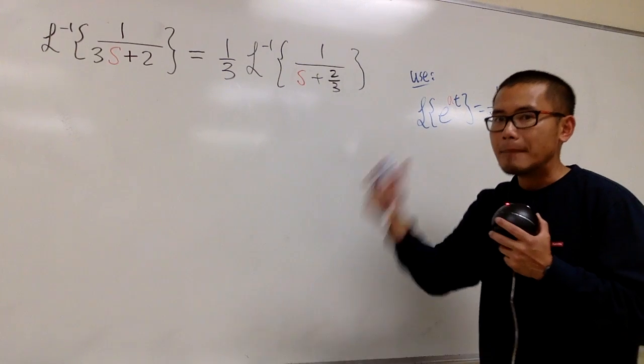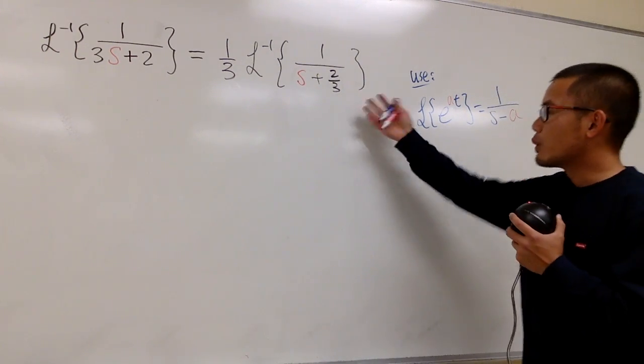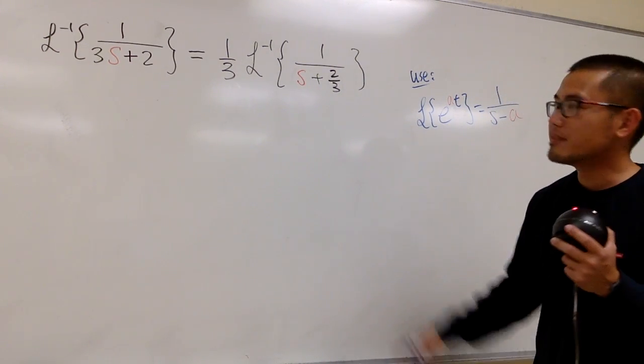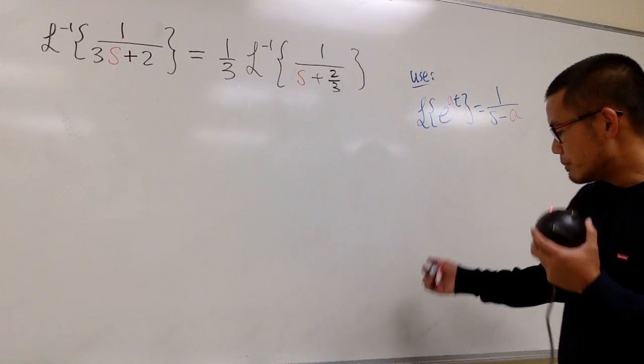here we have a plus. You have to look at the plus as minus negative. So in our case, the a will be negative 2 thirds. And with that being said, we are pretty much done.